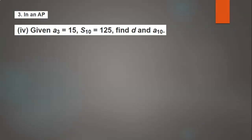Hello everyone, welcome back to our channel. Today's question is: in an AP, given a3 is equal to 15 and S10 is equal to 125, find d and a10. Here a3 is the third term of an AP, which is 15, and the sum of 10 terms is 125. We need to find the common difference and the 10th term of the AP.